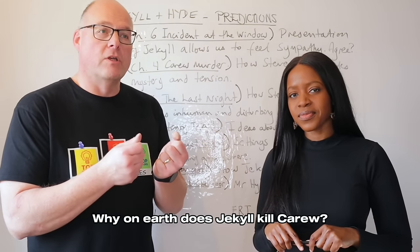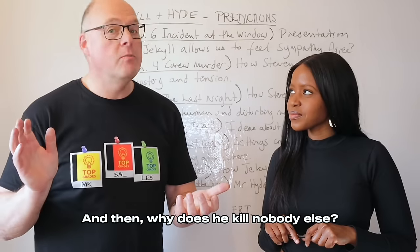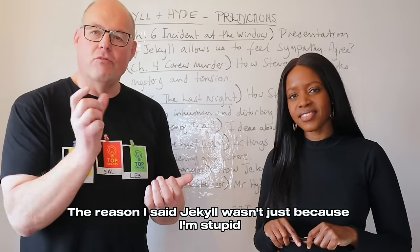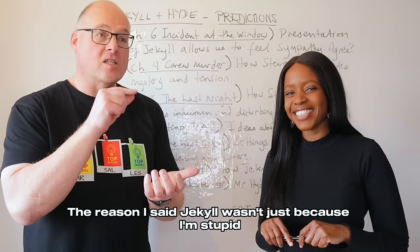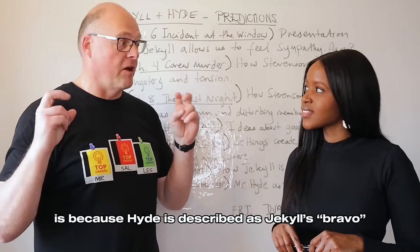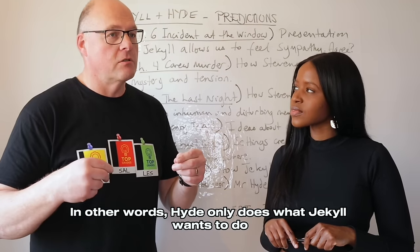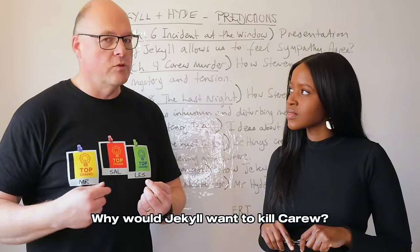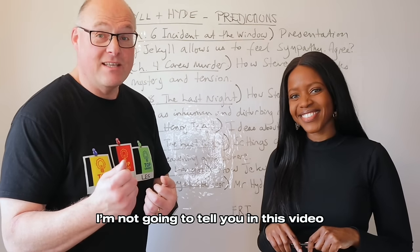The central mystery of the plot is: why on earth does Hyde kill Carew, and then why does he kill nobody else? The reason I said 'Jekyll' rather than 'Hyde' is because Hyde is described as Jekyll's bravo — in other words, Hyde only does what Jekyll wants to do — which brings us back to why Jekyll would want to kill Carew. I'm not going to reveal my theories in this video.